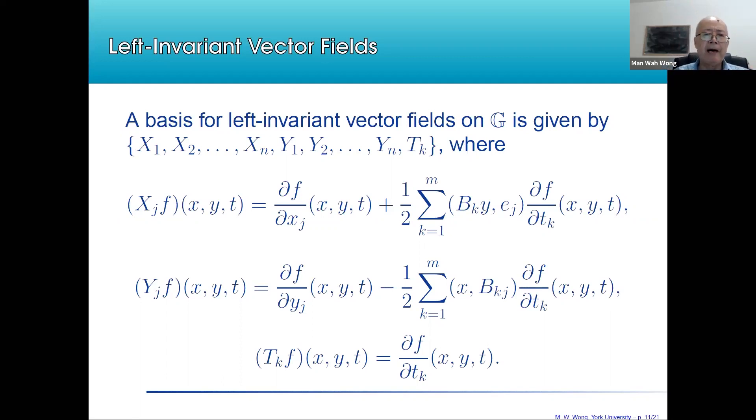Now, we have a Heisenberg group. It's a unimodular Heisenberg group. For studying Heisenberg groups, we need left invariant vector fields. We are going to pick a basis for these left invariant vector fields given by the X's and the Y's together with TK. The XJ, YJ and TK are given by the formulas listed on the slide.